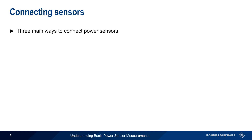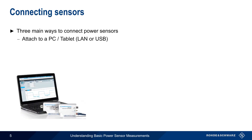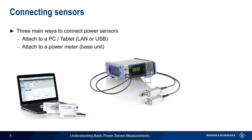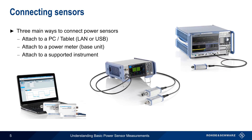There are three main ways that power sensors can be connected in order to obtain measurement results. Most modern power sensors can be attached to a PC or tablet using either USB or LAN connection, with software running on the PC controlling the sensor and displaying the results. Another common way is using a power meter base unit, a special instrument designed to connect to one or more power sensors, with built-in displays and hardware trigger capability. And some instruments, such as spectrum analyzers and signal generators, allow power sensors to be connected directly to them, with the results displayed via the instrument.